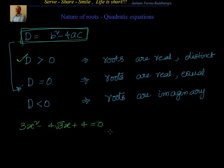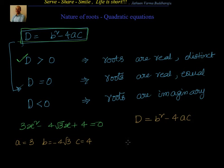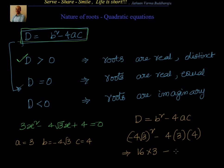Next example: 3x² − 4√3·x + 4 = 0. Here a = 3, b = −4√3, c = 4. Discriminant: D = (−4√3)² − 4 × 3 × 4 = 16 × 3 − 48 = 48 − 48 = 0. Since D = 0, we fall into the second category — the roots are real and equal.